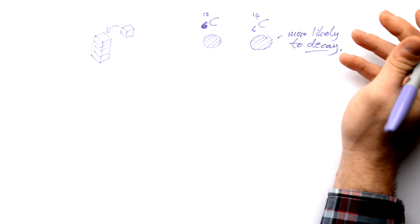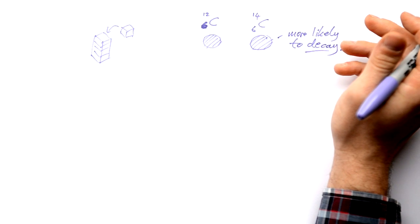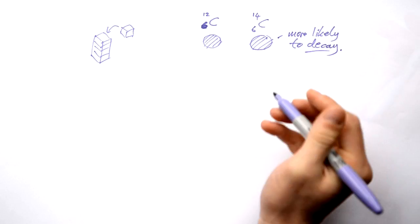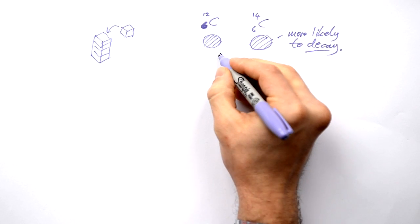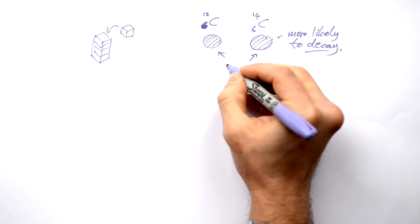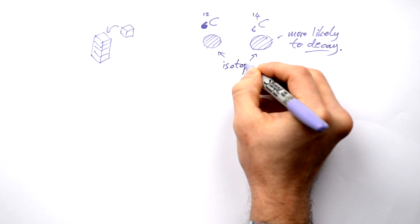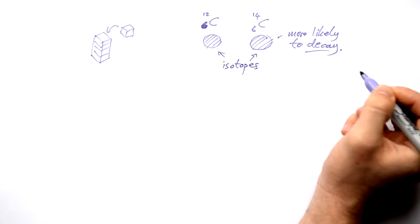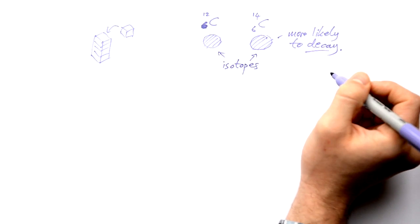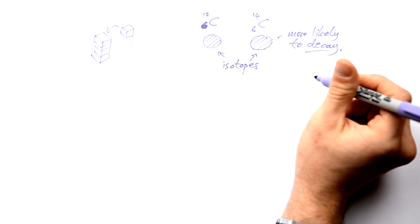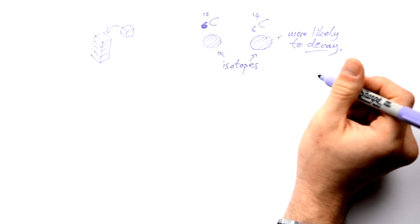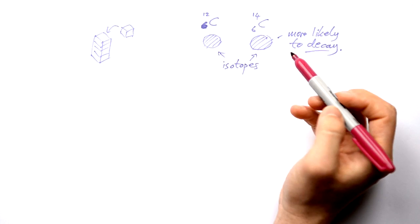In other words, fall apart, split into smaller bits. By the way, we call these isotopes. They're the same element, but they have different mass numbers because they've got different numbers of neutrons.